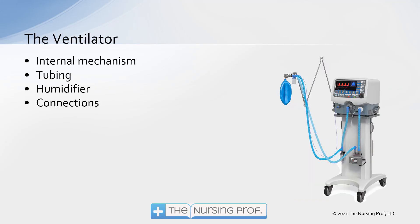Another possibility could be the ventilator itself. A number of different components could be contributing to the patient developing ventilator-associated pneumonia. The internal mechanisms themselves could be contaminated; the tubing could get broken and contaminated — for example, maybe you're turning the patient and the tubing becomes disconnected. The humidifier could become contaminated, and also connections, such as the connection to the endotracheal tube. For example, maybe the patient is getting aerosols for bronchodilation — those may also contribute to bacteria or virus getting into the tubing.